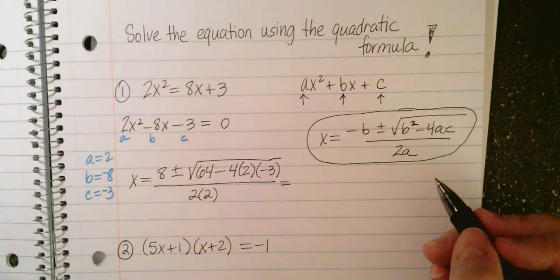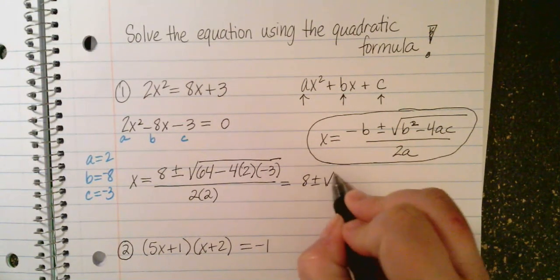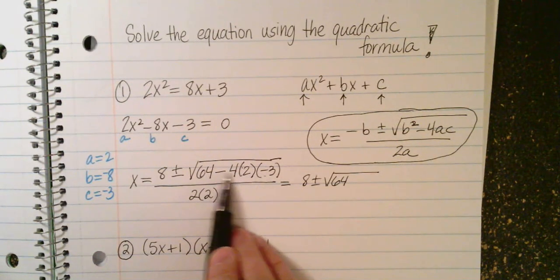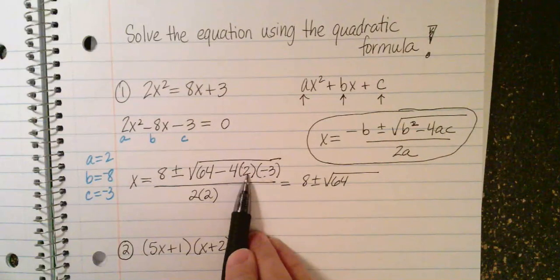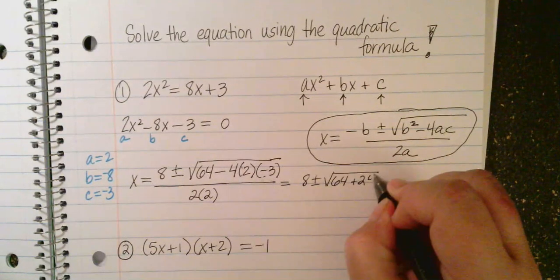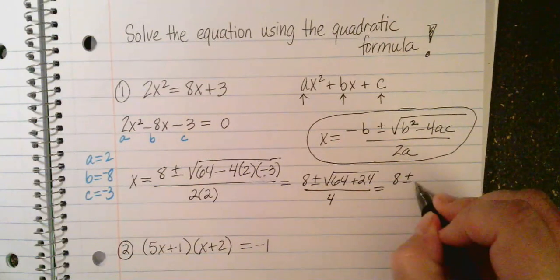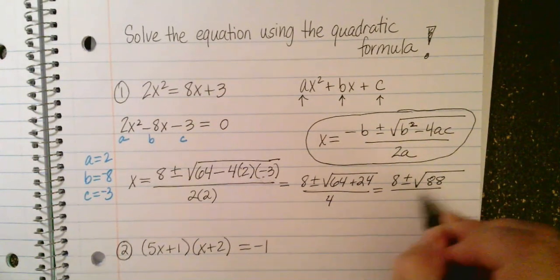From here on, it's just simplifying. So 8 plus or minus 64. And like I told you, this is going to turn into plus because it's negative 4 and negative 3. This all turns to plus. So 4 times 2 is 8. Times 3 is 24. So plus 24. All over 2 times 2 is 4. This is 8 plus or minus. That's 88. All over 4.